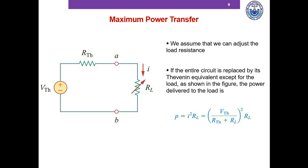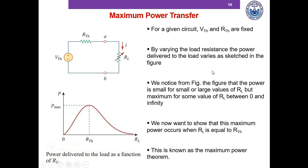For a given circuit, VTH and RTH are fixed, so by varying RL the power delivered to the load varies as shown in the figure. On the x-axis is the load resistance and on the y-axis is power. If RL is too low the power is lower; if RL is too high the power is also lower. There is a sweet spot at which the power reaches its maximum value, and that occurs when RL equals RTH.